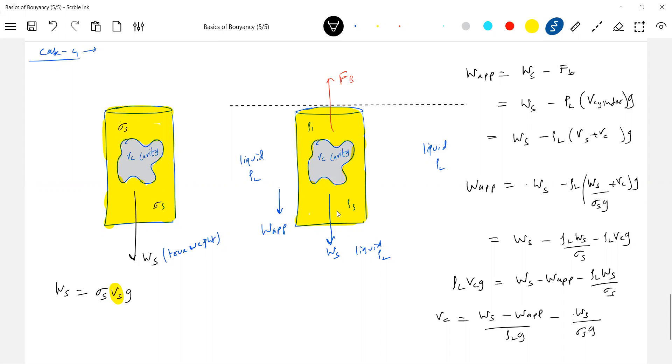Can we find out all these things? So like this, I'm able to determine the volume. I know actual weight, I can measure. So this W apparent is measurable, Ws is measurable. So how much of that air gap is there, I'm able to tell it.